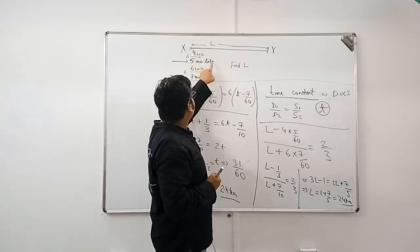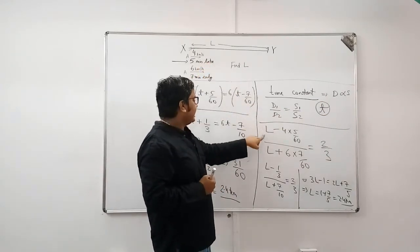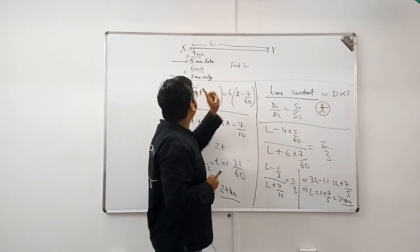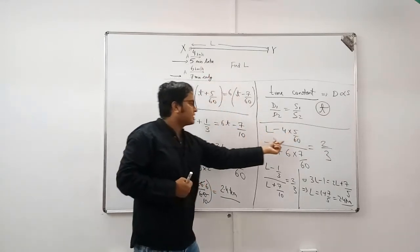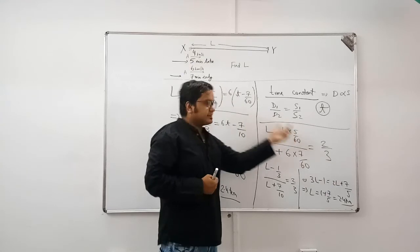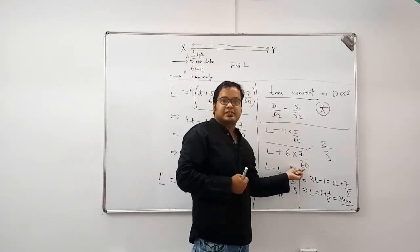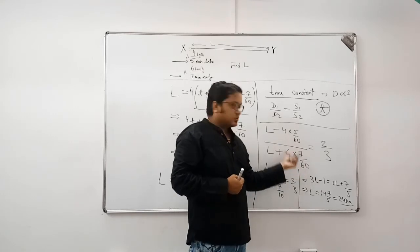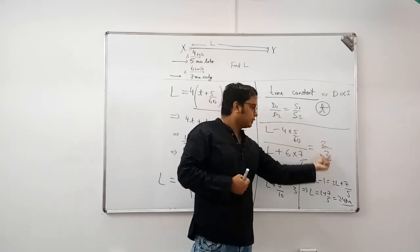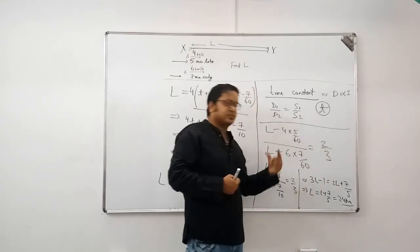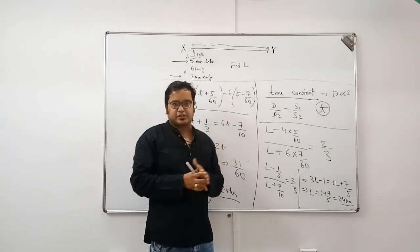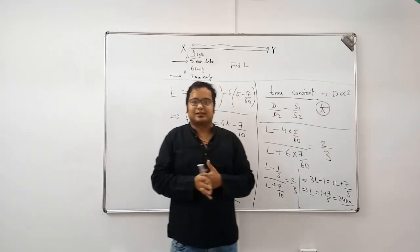In original time T, in the first case, L minus 4 into this much because he was late. So, he would have covered this much less. In the second case, it was early. So, if we take the full time, we will cover this much extra. Distance ratio is equal to speed ratio and you get to the solution faster than the traditional method. I hope the concept is clear. Thank you.